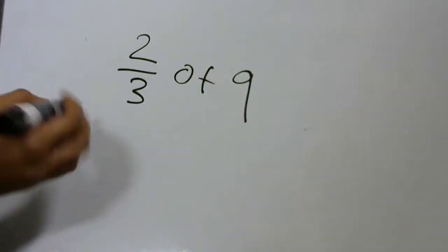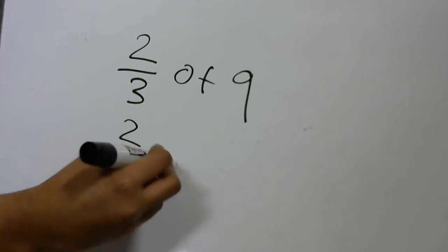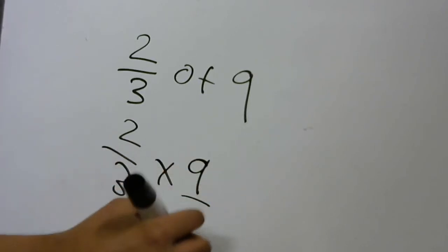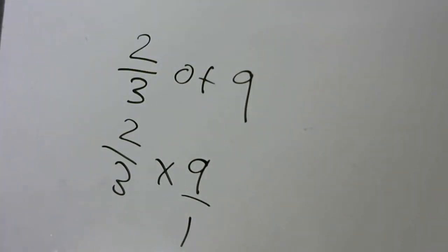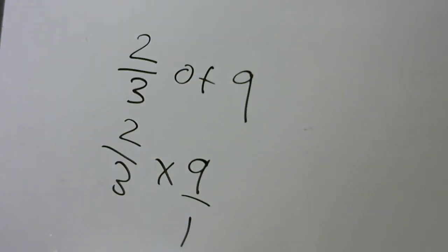So what we're supposed to do is 2 by 3 times 9 by 1. Why? Because we're going to convert the whole number 9 into a fraction by putting a 1 on the bottom, so that is 9 over 1.